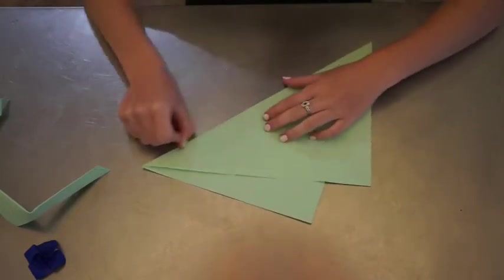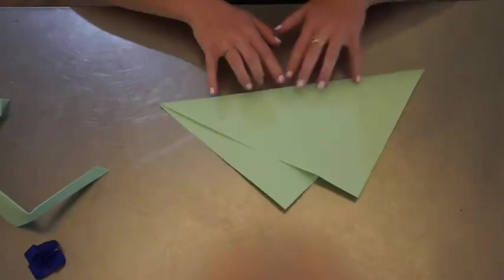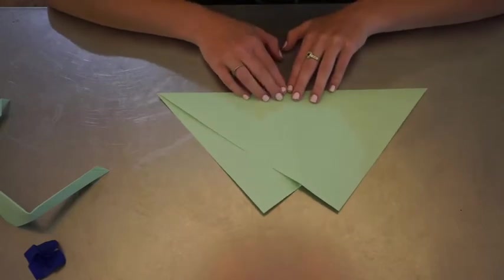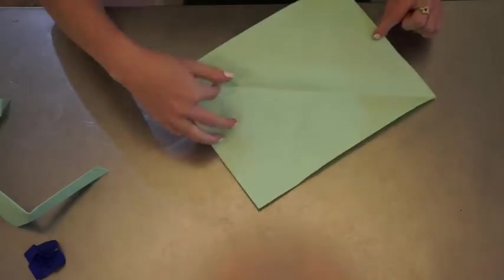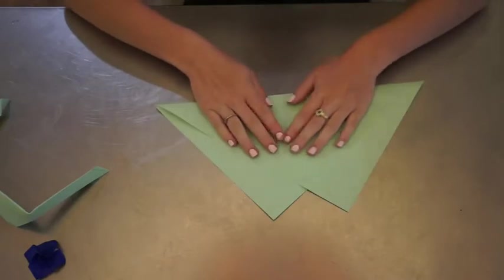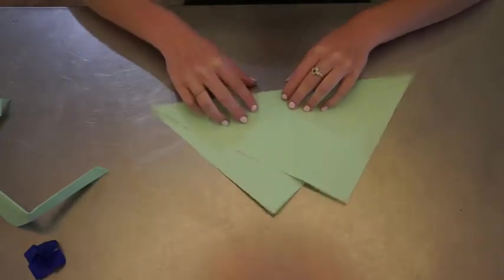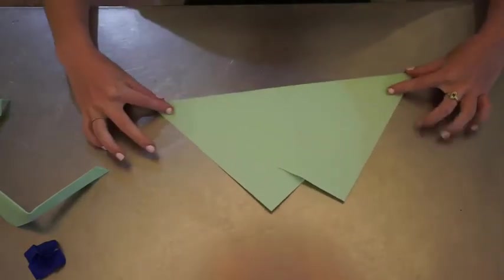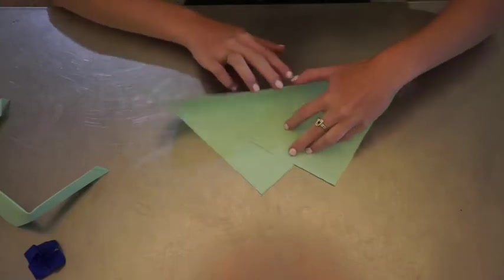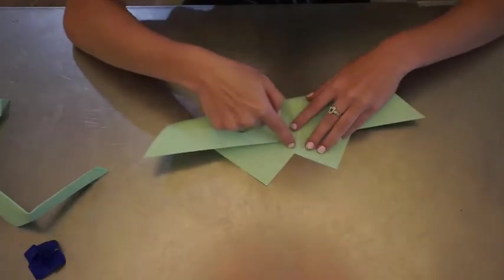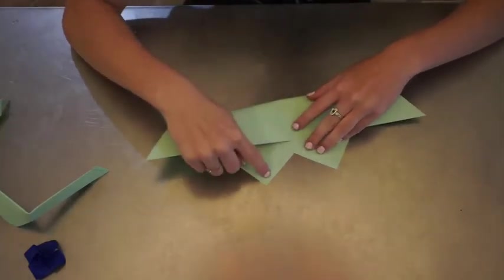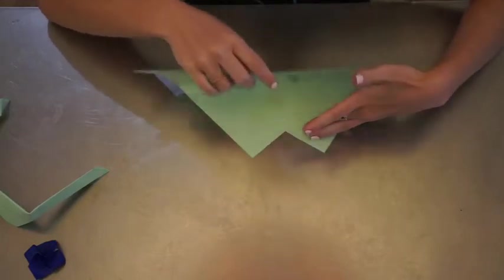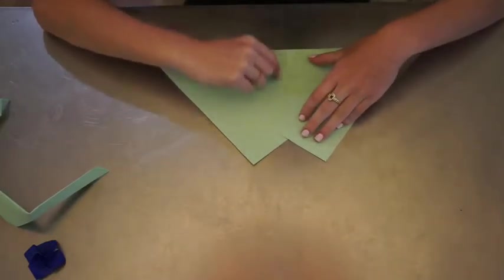We have the paper folded on the diagonal as you can see here. Then what you're going to do is take this edge, this crease that you just made, and fold it up to this point here where the two triangles meet.